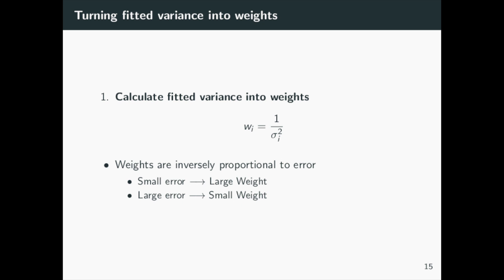This intuitively makes sense since we know that smaller variances provide more information on the model and should be more heavily weighted than those with larger weights.